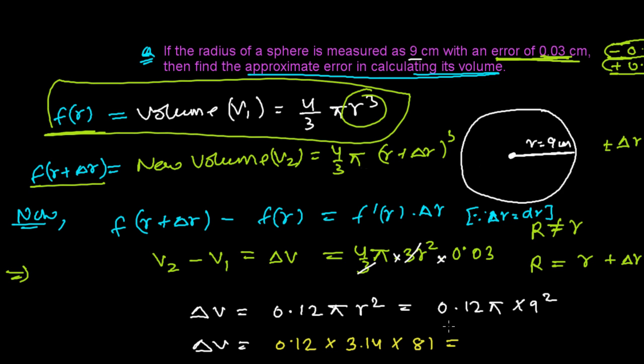Finally, we can use the calculator or by normal multiplication we can find out. For faster, I'm using calculator here: 0.12 times 3.14 times 81, that equals 30.52. Since this is centimeters, it should be centimeter cube. This is how we find out the error approximation questions using the differential calculus.